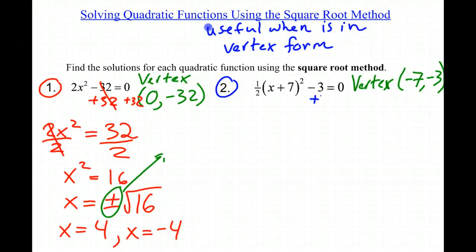So my first step is to add 3 to both sides. And I get that 1/2 times the quantity (x + 7)² is equal to 3.